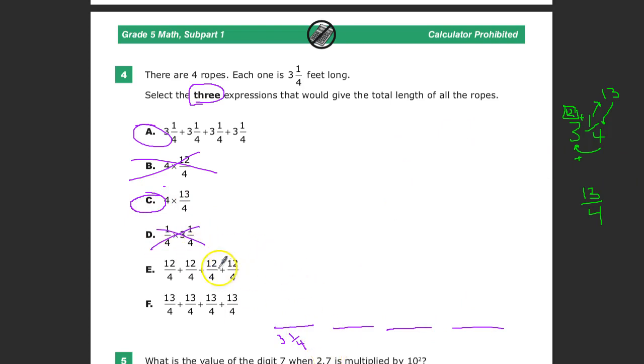And then for the last one, again, I'm not going to fall for the 12/4 thing. I know what game you're trying to play State of Tennessee, but I'm not going to fall for it. And then 13/4 plus 13/4 plus 13/4 plus 13/4 gets me to my final answer.